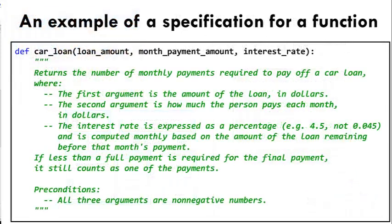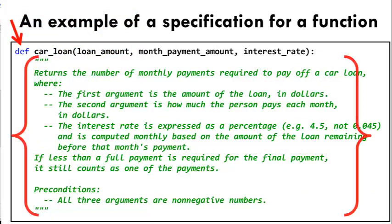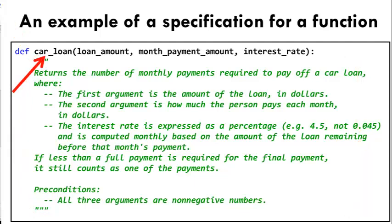Here is a very simple example. The specification of this function is written via the def expression and the comment that appears immediately after it. This specification specifies the name of the function is car_loan. The function needs three pieces of information, which we call the parameters of the function.